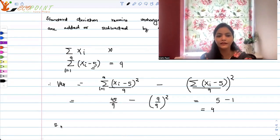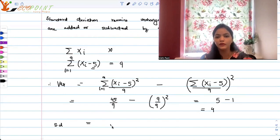So variance is 4. That means standard deviation of these observations will be square root of 4, and that will be 2.